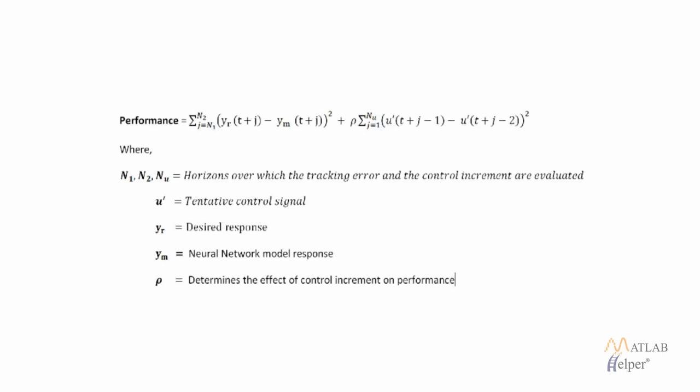Here N1, N2, and NU define the horizons — the time steps over which the tracking error and the control increments are evaluated. U' is the tentative control signal, YR is the desired response, and YM is the neural network model response. Rho is the parameter multiplied to determine the effect of the sum of squares of control increments on the performance function.